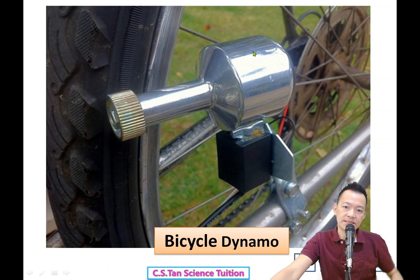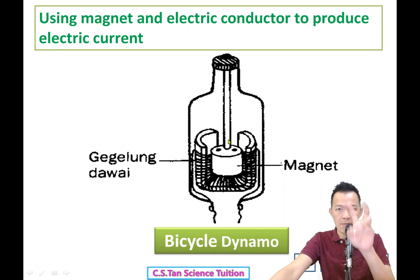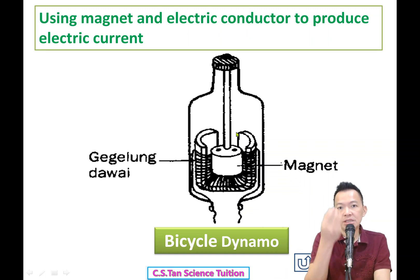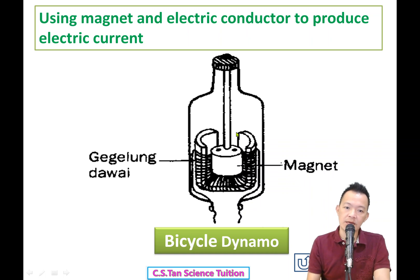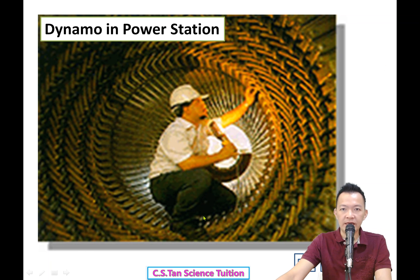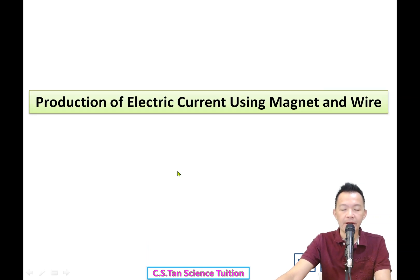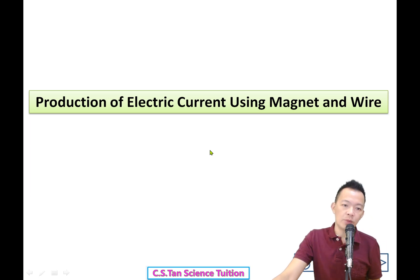Same as a bicycle dynamo 脚车的发电机 - wire and magnet inside. When the dynamo turns, the wire and magnet generate electricity. Wire and magnet - these two small things changed the whole world 这两种小小的东西改变了全世界, producing electric current that changed our lives. The dynamo in the power station is also wire and magnet 就变成了我们的发电机.